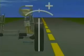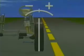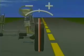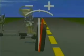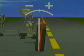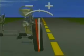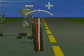Camber is measured in degrees. A wheel with zero degrees camber is vertical. When a wheel tilts outward at the top, it has positive camber. And when a wheel is tilted inward at the top, it has negative camber.